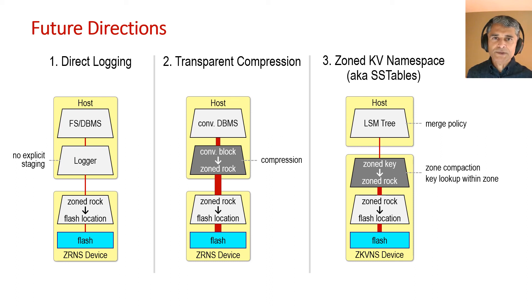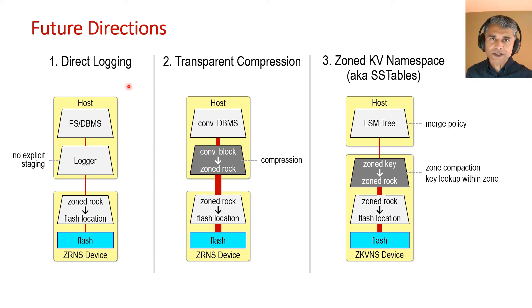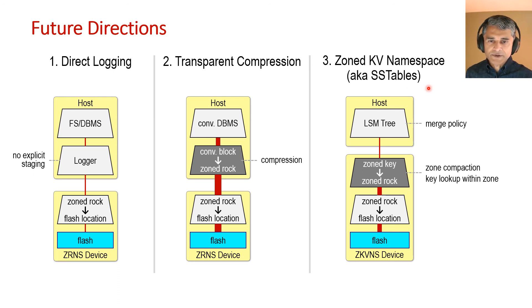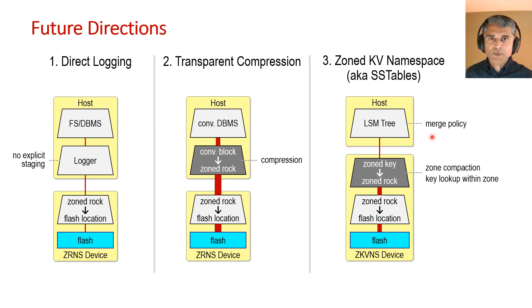All of what I have presented is conceptual, and it would be useful to implement and evaluate these concepts and to build on them further. For example, it would be useful to evaluate rock-based logging in the context of a real database system. Second, one could implement a device mapper that provides transparent compression to conventional applications. Third, one could extend ZRNs further to offload I/O from LSM trees: if each KV record is stored as a rock and the device understands the KV format, the device can perform zone compaction while the host retains control over the merge policy, supporting a variety of LSM designs.